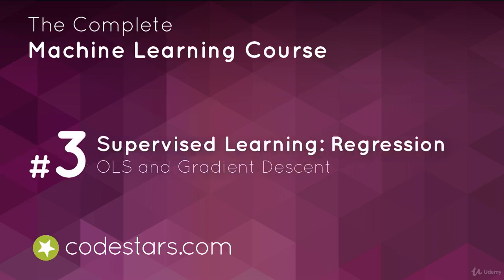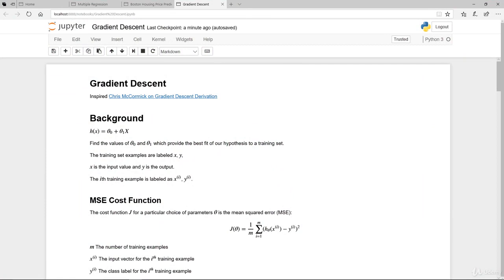Welcome back. In the previous lesson we covered multiple regression as well as feature importance. The video before that covered multiple regression along with statsmodels. In this video we're going to take a moment and understand the underlying estimation method used in machine learning. Instead of going through normal linear algebra to calculate the estimates, most of machine learning and deep learning makes use of gradient descent. There is a variant called stochastic gradient descent, but in this lesson we'll just cover gradient descent.